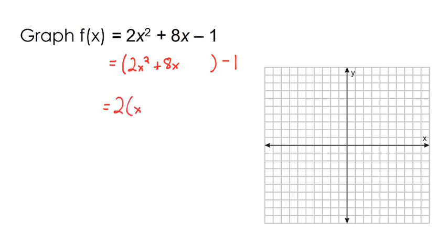So if I factor out that 2 that leaves me with x squared plus 4x. And then I still have my minus 1 over here. And so now I'm gonna complete the square.